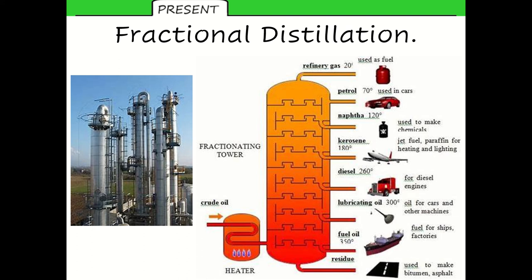So each fraction produced contains hydrocarbons with a similar number of carbon atoms. And you need to learn the stages of fractional distillation. So first of all, the crude oil, that's straight from the ground, is heated, obviously in this heater or furnace. And when that gets heated, the hydrocarbons inside start to boil and turn into a gas.